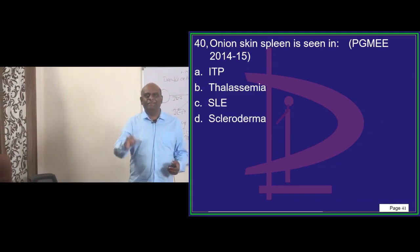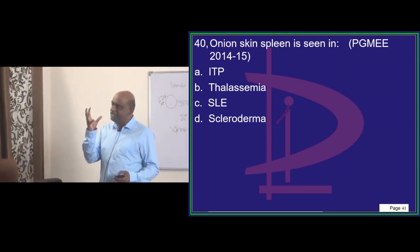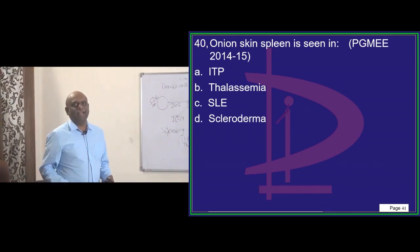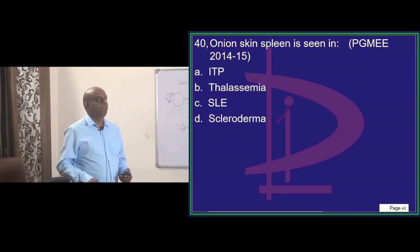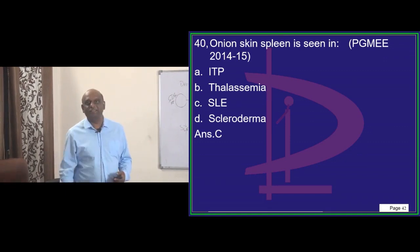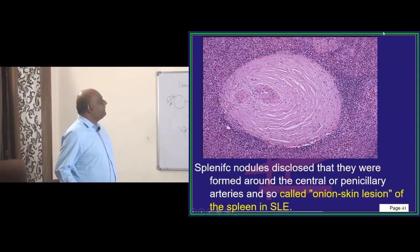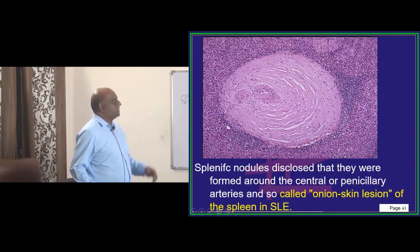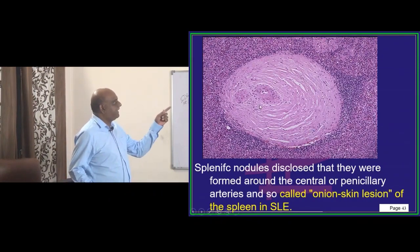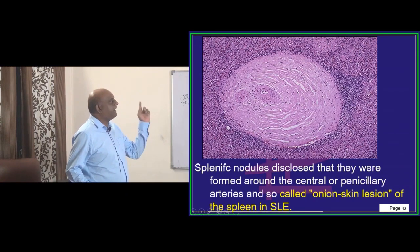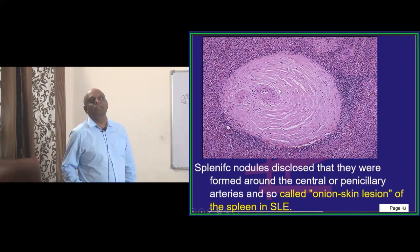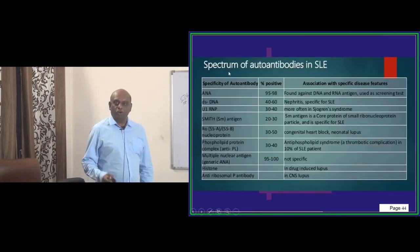Onion skin spleen — if you do a dissection of the spleen, it looks like onion skinning. Where do you see this? We see it in SLE. This is a typical splenic nodule involving the central or penicillary arteries, called the onion skin lesion of the spleen in SLE.